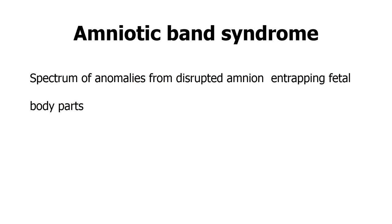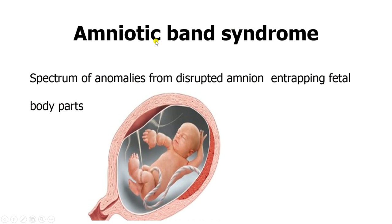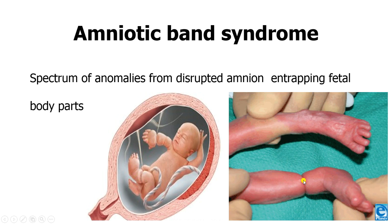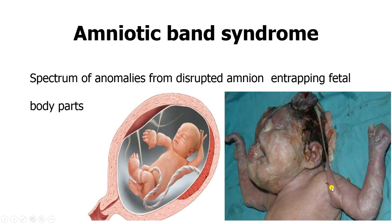Amniotic band syndrome is a spectrum of anomalies where the amniotic membrane is disrupted and traps multiple fetal body parts. Here you can see the amniotic membrane sending out septations that are cutting off blood supply to distal extremities — the hand and the foot. This is how they typically present: an amniotic band constriction at the level of the leg, and near the ankle the foot will actually autoamputate because of constriction of blood supply. Here you can also see it affecting the arm and constricting all the way through the head.